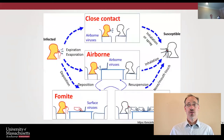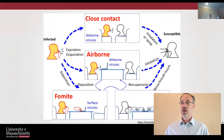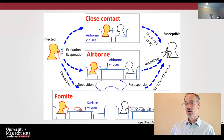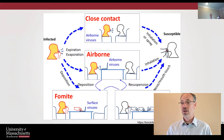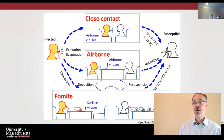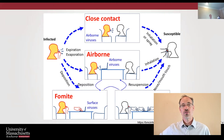When we talk about transmission, we're talking about different types. Close contact — someone coughing in your face. Airborne transmission — someone across the room who is coughing. And fomites — where people cough or wipe their nose, touch something, and then you touch it and get infected that way. So: close contact, airborne, and fomites.